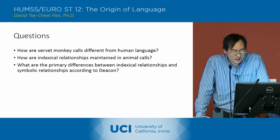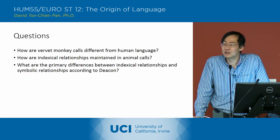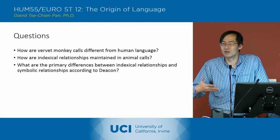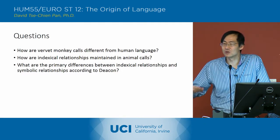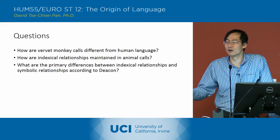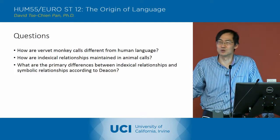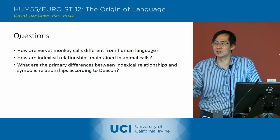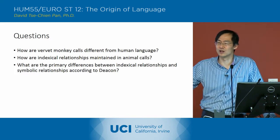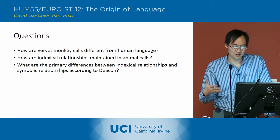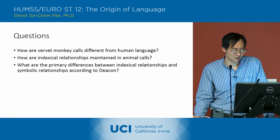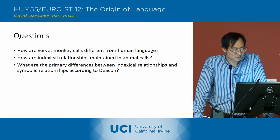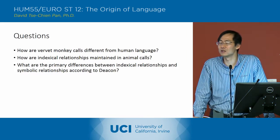So how are indexical relationships maintained in animal calls? They're maintained by that continual repetition of the object to which it refers. That continual repetition of the relationship between sign and object is necessary to maintain the indexical relationship.